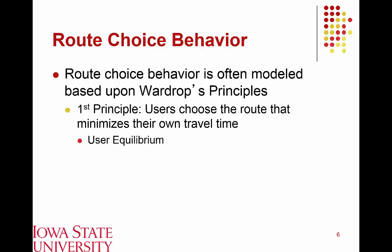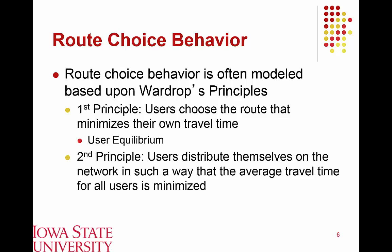Under user equilibrium, all users are trying to minimize their own travel times, and in doing so, those travel times would tend to be equal to one another. Wardrop's second principle states that users can also distribute themselves across the road network to minimize the average — and therefore the total — system travel time. At first glance this may appear to give the same solution as user equilibrium, but under this condition some users face a higher travel time and some a lower travel time, such that the overall system travel time is minimized. We refer to this as a system optimal solution.